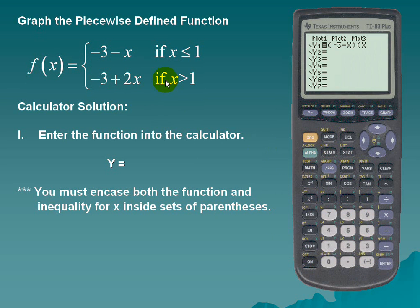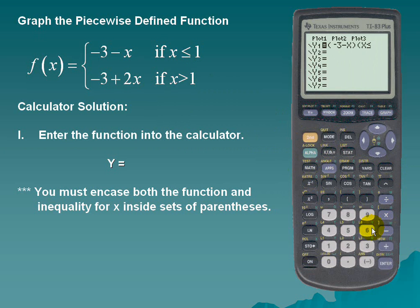The inequalities can be found in the TEST feature of the calculator. It's a yellow function, so it's accessed via 2nd then MATH, which is TEST. The inequality we should choose is less than or equal to — that's the sixth option. Then we enter a 1 and a closed parenthesis.